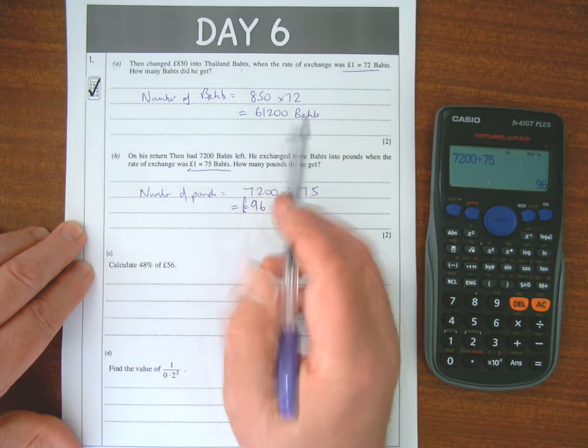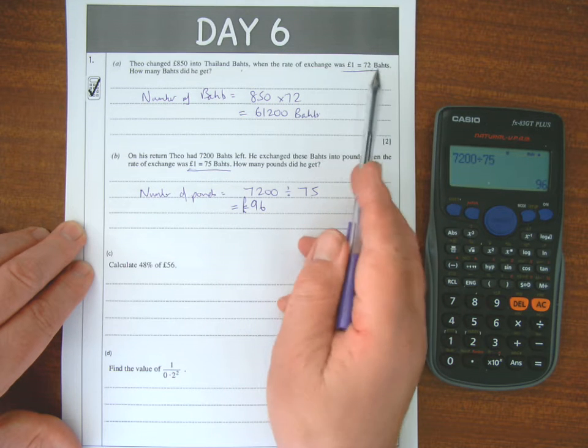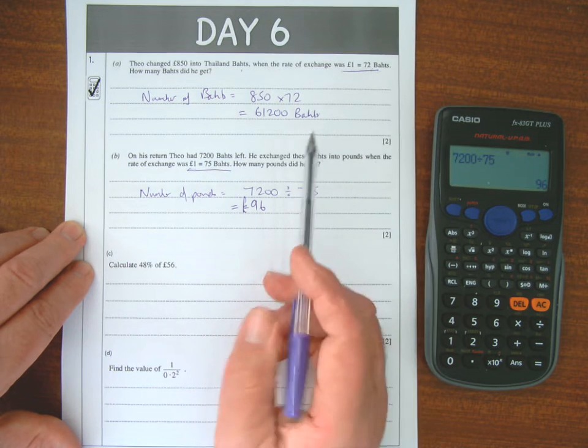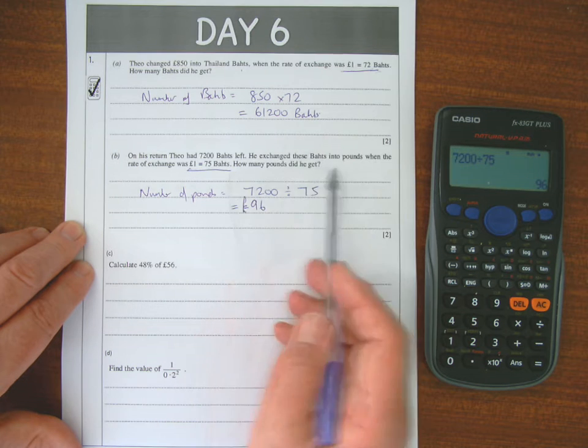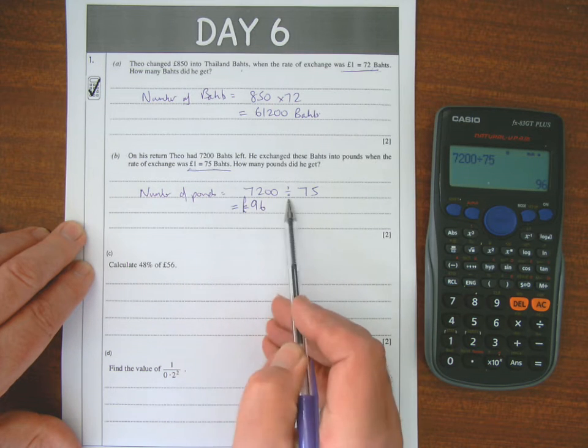So changing from pounds to foreign money, I'm multiplying by the exchange rate. And to change from foreign back into pounds, I'm dividing by the exchange rate.